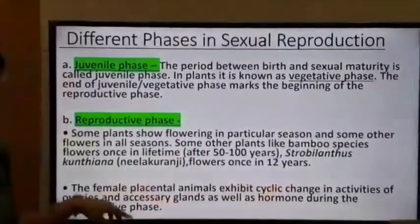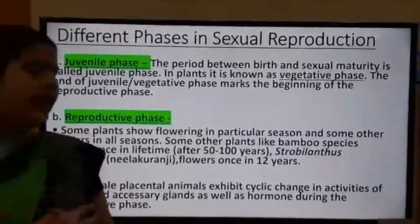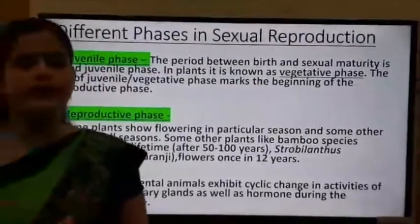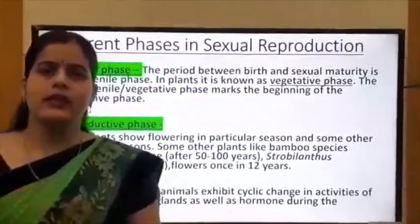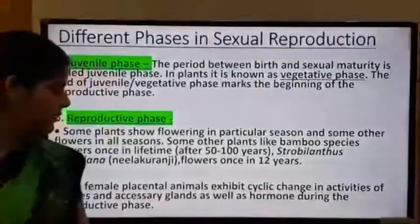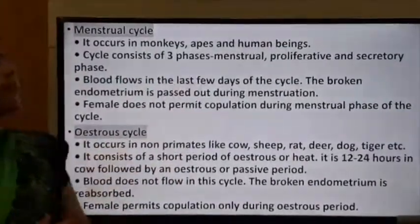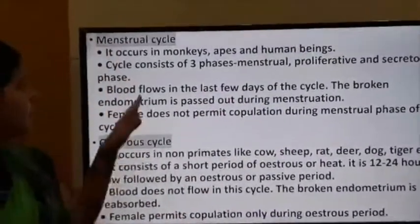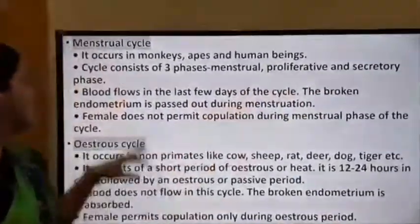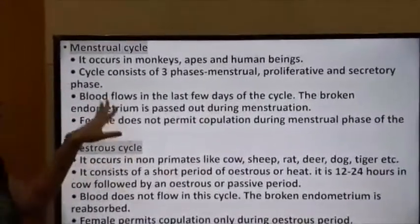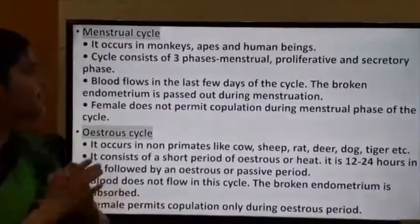During the reproductive phase, female placental animals show cyclic changes in their ovaries, accessory glands, and hormones. Due to this there are two types of cycles: the menstrual cycle and the oestrous cycle. The menstrual cycle occurs in monkeys, apes, and human beings, and consists of three phases: menstrual phase, proliferative phase, and secretory phase.